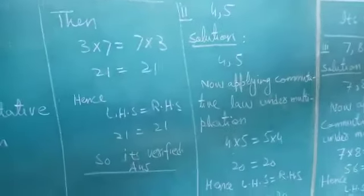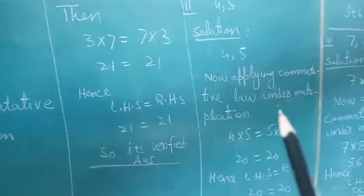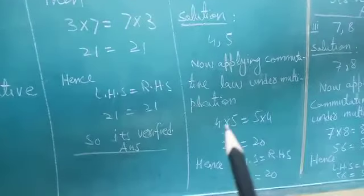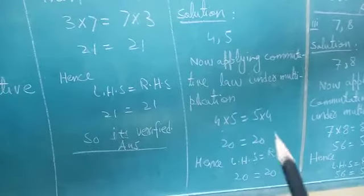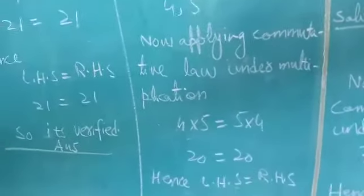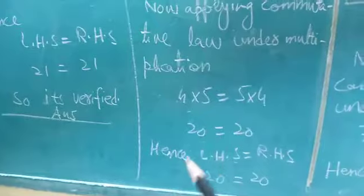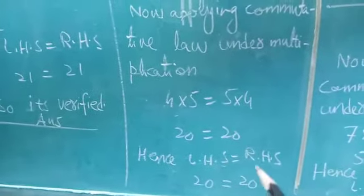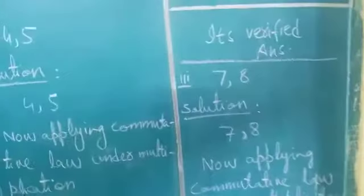Now the second part is 4 and 5. Applying commutative law under multiplication: 4 into 5 is equal to 5 into 4. Four 5s are 20 and five 4s are 20. Hence left hand side is equal to right hand side: 20 = 20. It's verified.